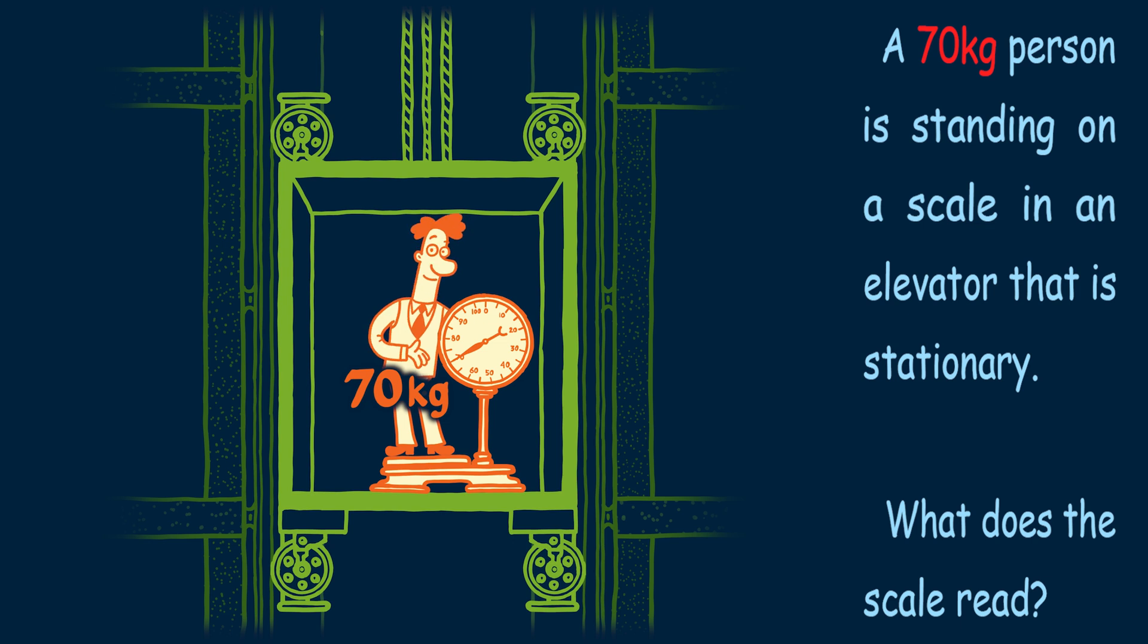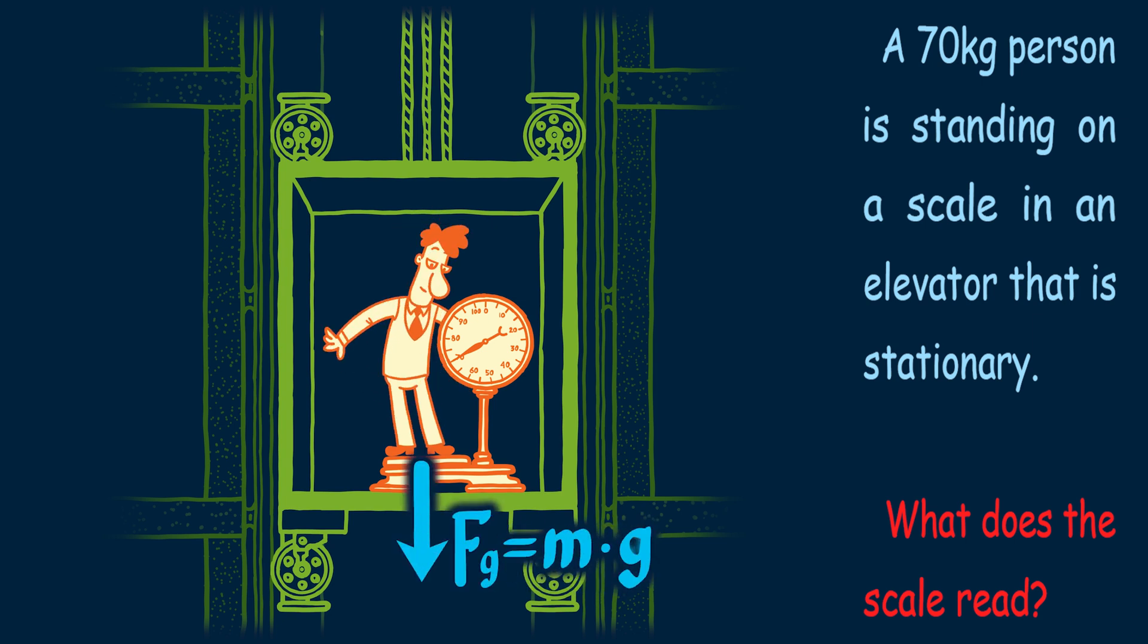A 70kg person is standing on a scale in an elevator, and the elevator is at rest. The first thing we do is draw our force diagram, which has the force of gravity pointing straight down, m times g, and an unknown normal force pointing straight up. This is what keeps the person from falling through the elevator floor.